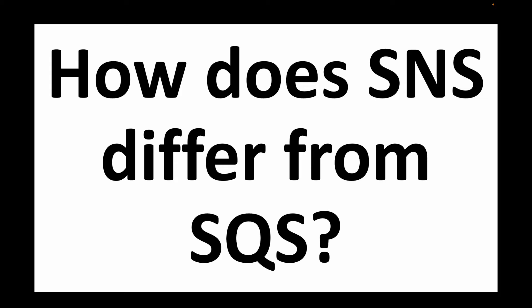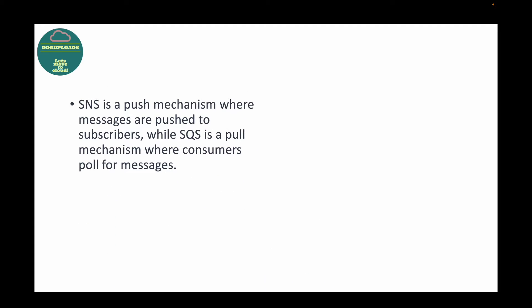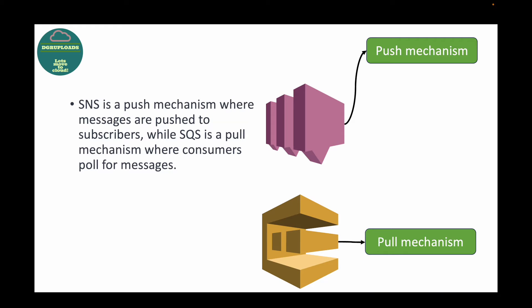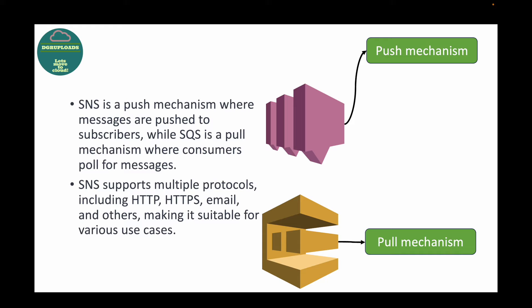Moving on to the next question: how does SNS differ from SQS? Both are messaging services, but the key difference is that SNS follows a push mechanism — messages are pushed to your subscribers. SQS follows a pull mechanism — consumers or end users need to pull the message from the queue. SQS is more like a queue where messages are stored and consumers pull from it.